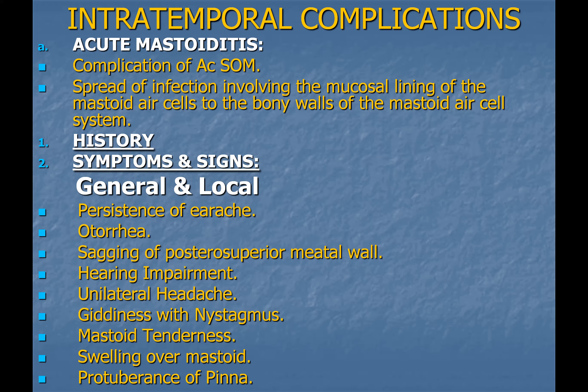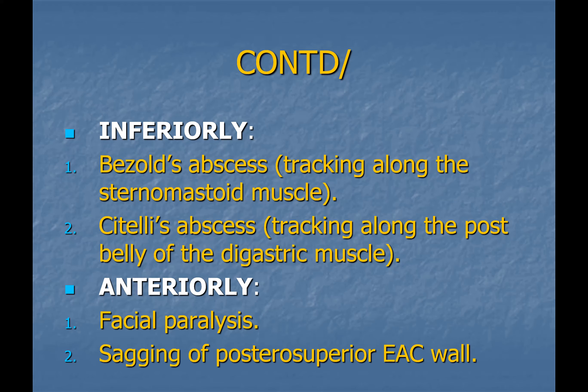Bezold's abscess is a collection of pus along the sternocleidomastoid muscle in relation to mastoid infection. The patient develops swelling in the upper part of the neck. Citelli's abscess occurs when there is an abscess around the posterior belly of the digastric muscle. The treatment plan is the same as discussed.